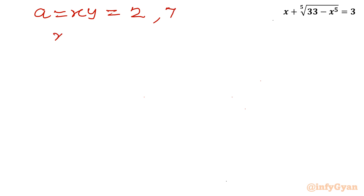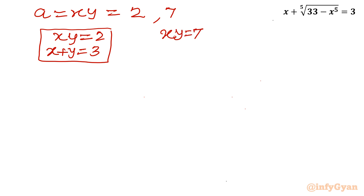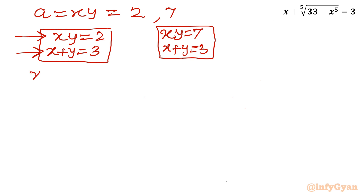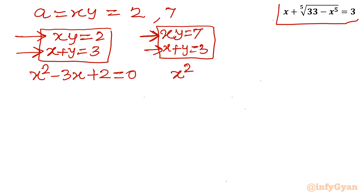Let us frame two systems of equations. First system: xy equals 2 and x plus y equals 3. Second system: xy equals 7 and x plus y equals 3. Since x and y are the roots, we frame quadratic equations in x. First: x^2 minus 3x plus 2 equals 0. Second: x^2 minus 3x plus 7 equals 0.